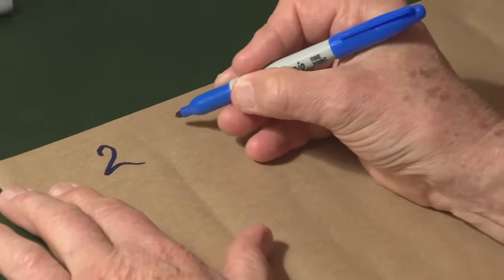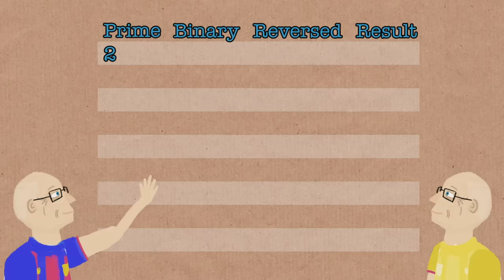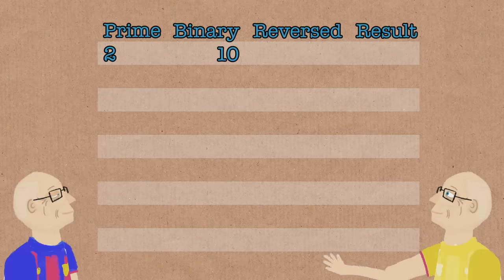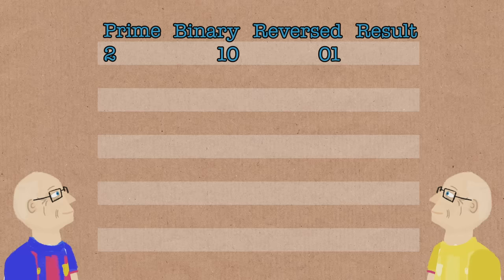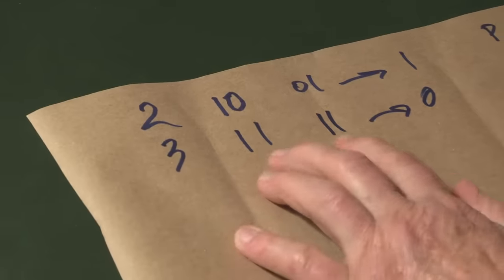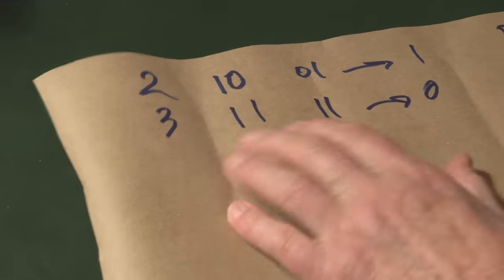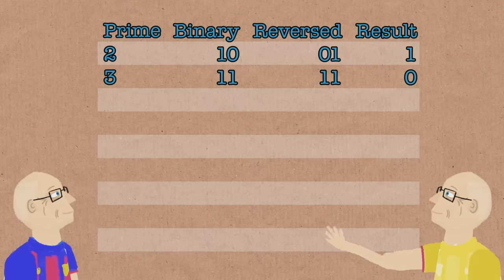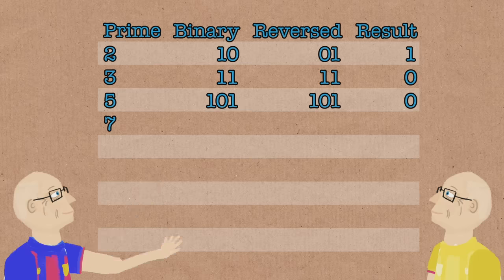The first prime is 2, which in binary is 1 0. And we reverse it and we get 0 1, which is 1. And we subtract and we get 1. So it's p minus reverse p in binary. All right, next one is 3. Reverse it. We get 1 1. 1 1 from 1 1, 3 minus 3 is 0. So the next term is 0. 5, 1 0 1. 1 0 1 0. 7, 1 1. It'll get more interesting in a minute. We get 0.